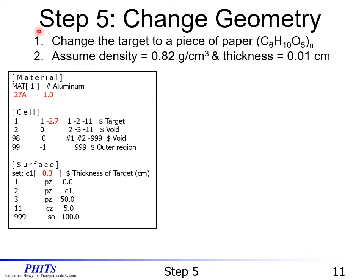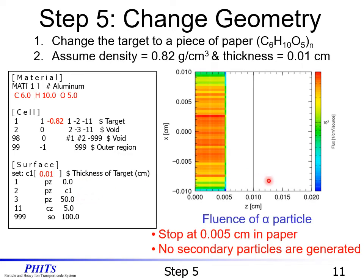Let's go on to Step 5: change geometry. First, please change the target to a piece of paper. The chemical formula of paper is C6H10O5, so please change the material section along the red color. We assume that the paper has a density of 0.82 g/cm³ and a thickness of 0.01 centimeters. Therefore, please change the density in the cell section and change C1 in the surface section along the red color. We can see the fluence of alpha particles as shown in this figure. We find that the particles stop at 0.005 centimeters and no secondary particles are generated.